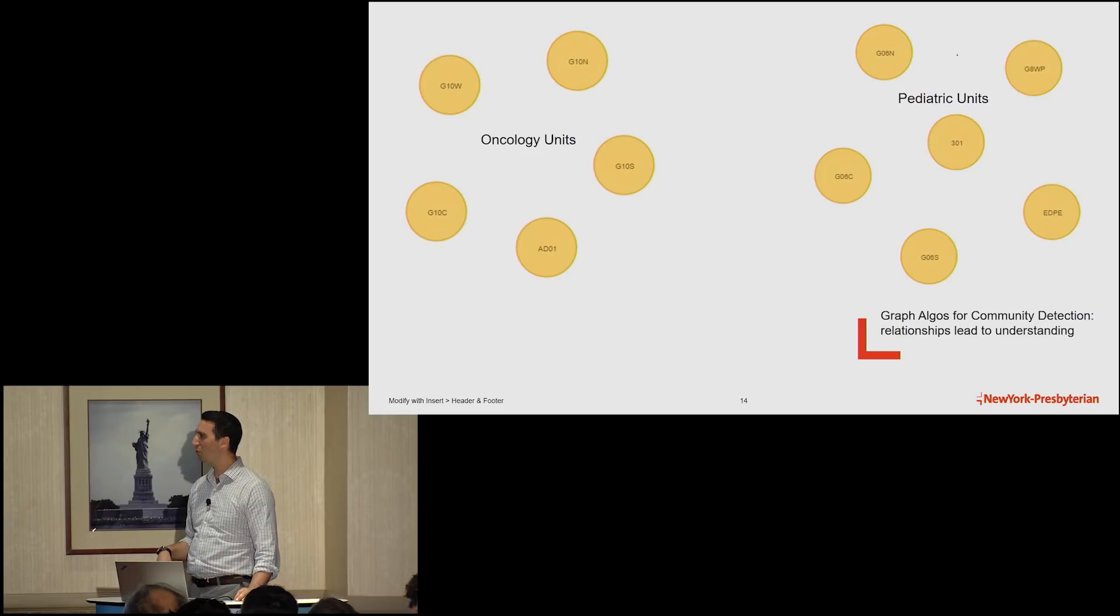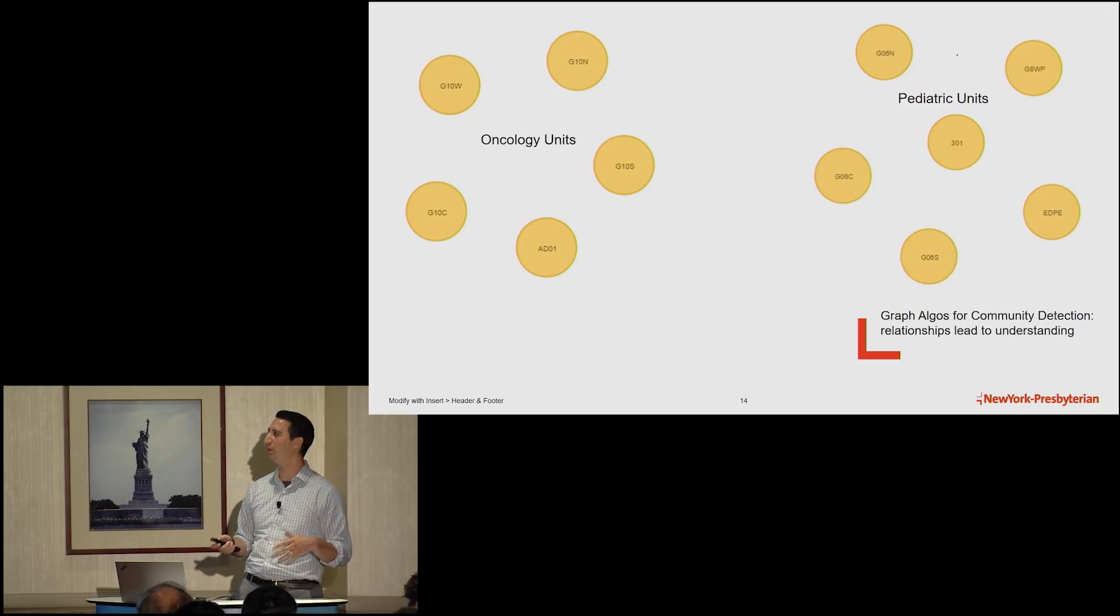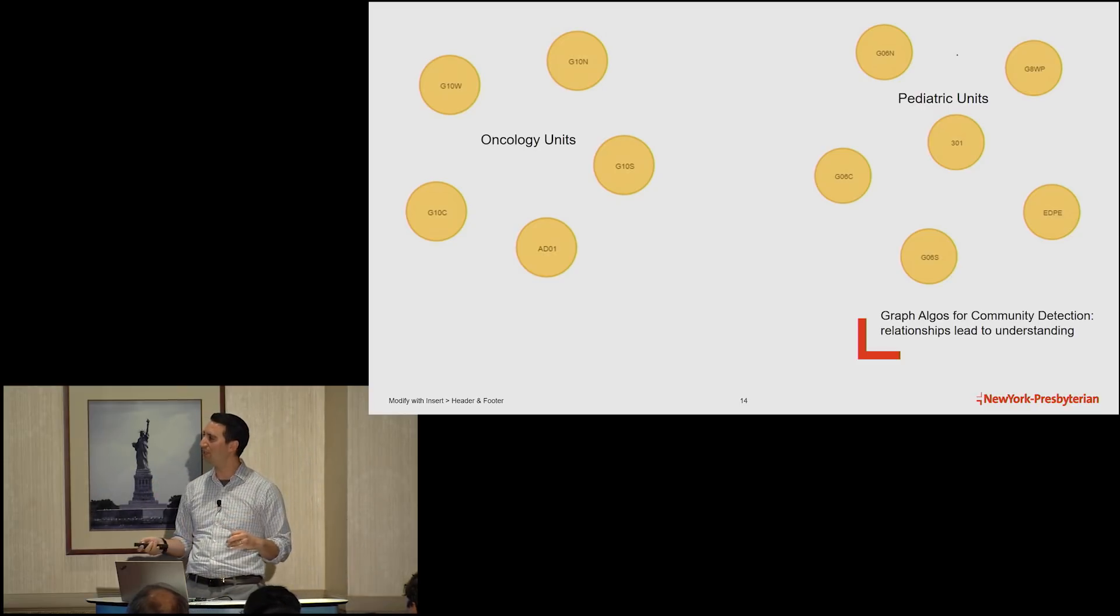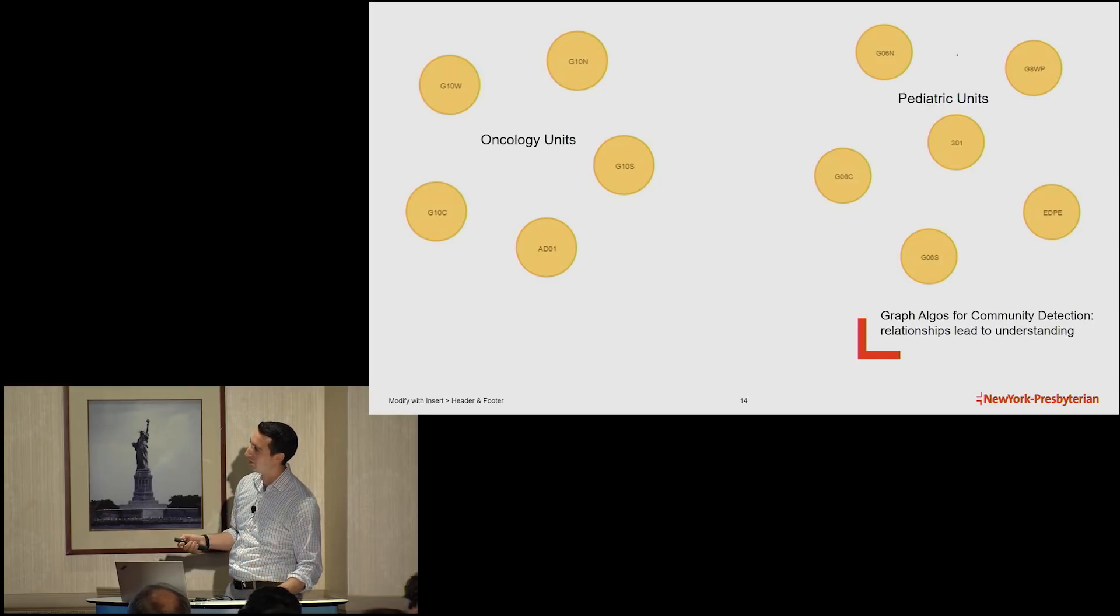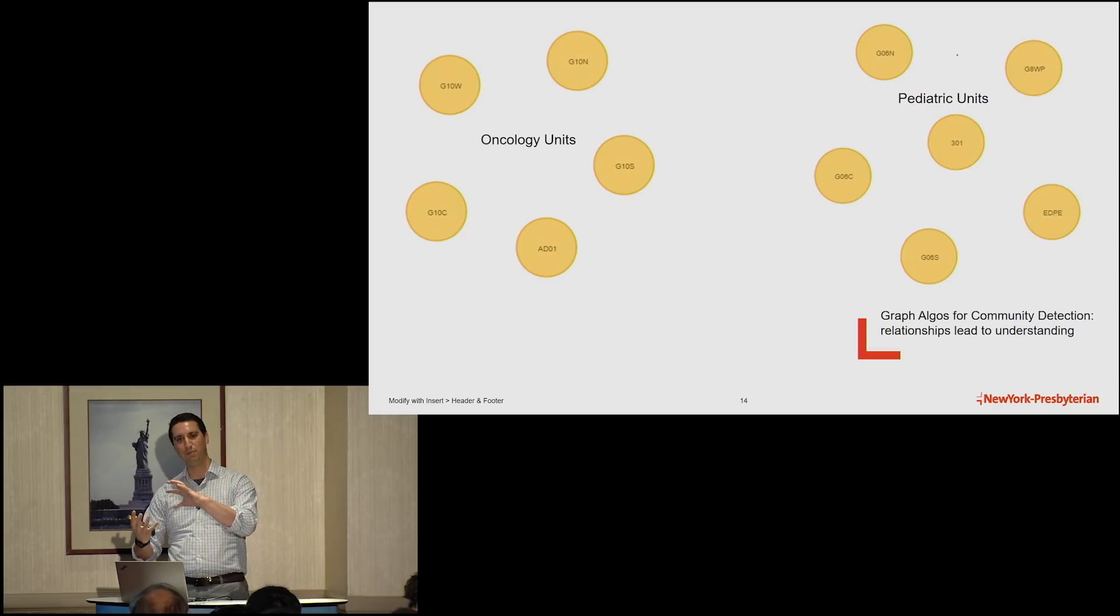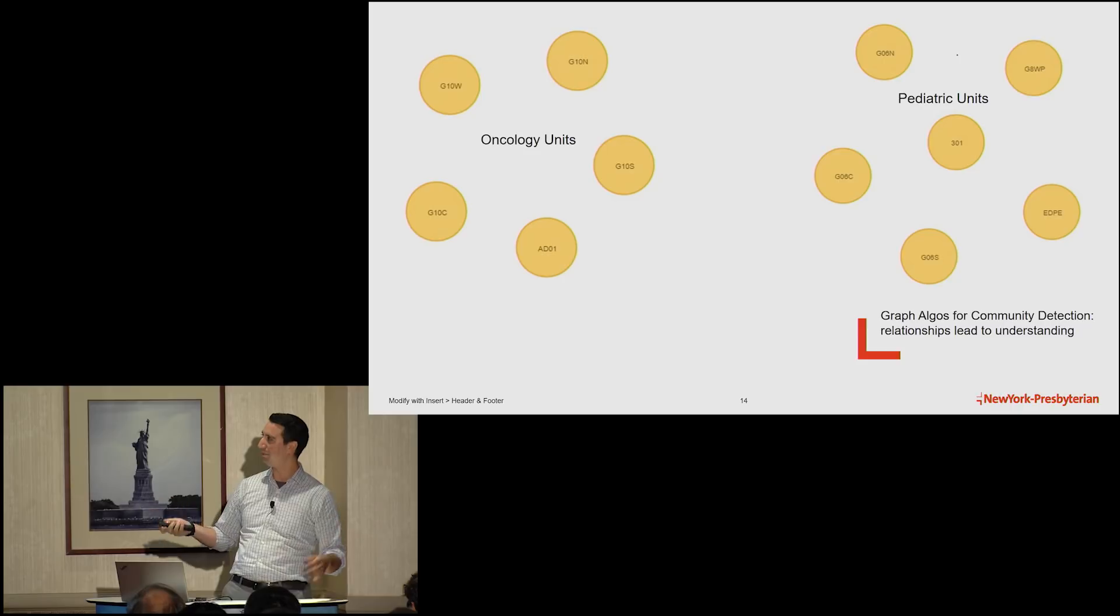So just a cool example of something that you can do using some graph analytics, really unrelated. But now that we understand how patient flow works and what a patient trajectory looks like, we can apply some, like, I used a community detection algorithm to understand, I fed it the graph. I said figure out what the communities are. And it did a pretty good job. I mean, these are all oncology units. These are all pediatric units. So it understands that patients of similar type end up in these similar units. So some interesting applications.